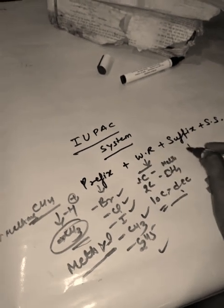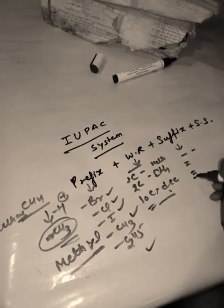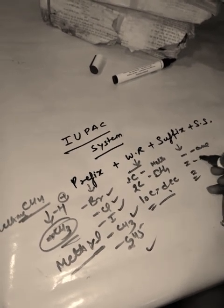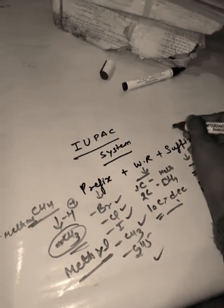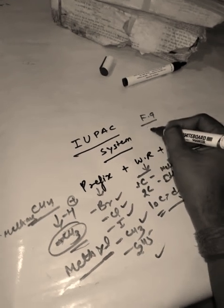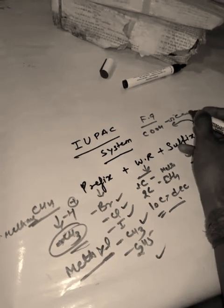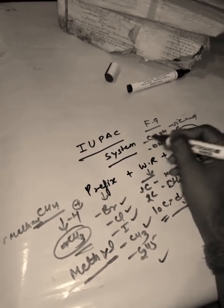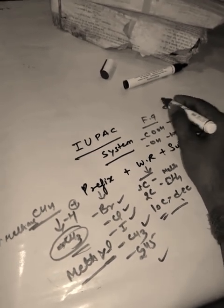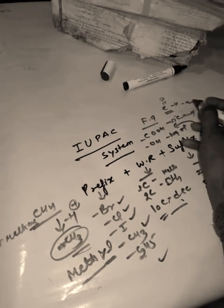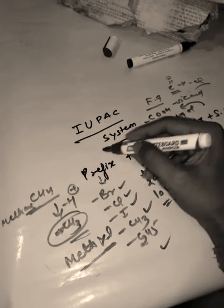The suffix indicates the type of bond present: single, double, or triple. For a single bond use '-ane', for a double bond '-ene', for a triple bond '-yne'. The secondary suffix indicates the functional group — for example, -COOH gives '-oic acid', -OH gives '-ol', and -CHO (aldehyde) gives '-al'.